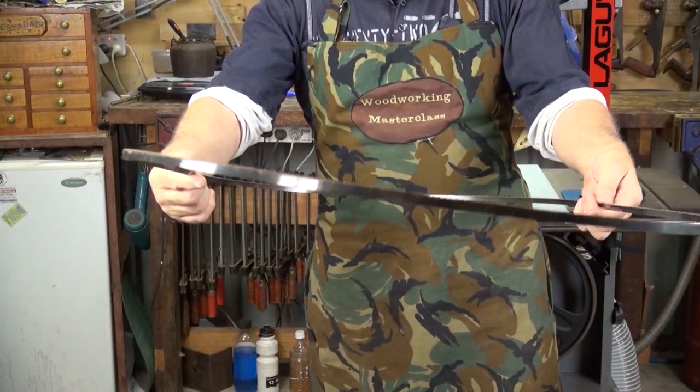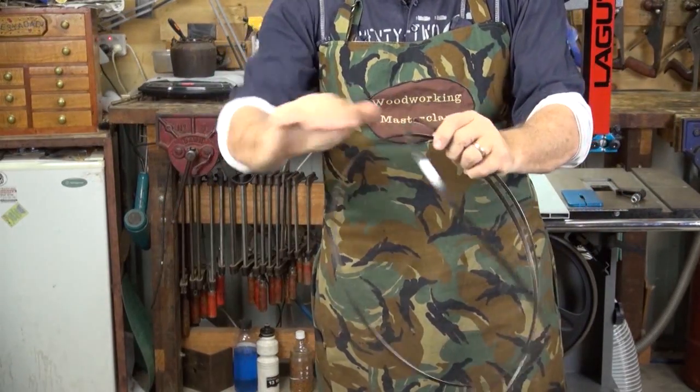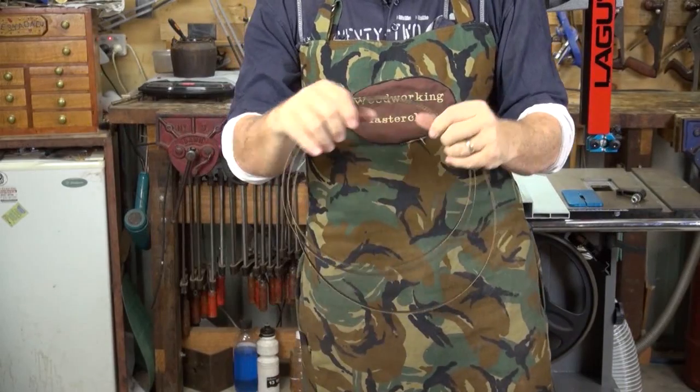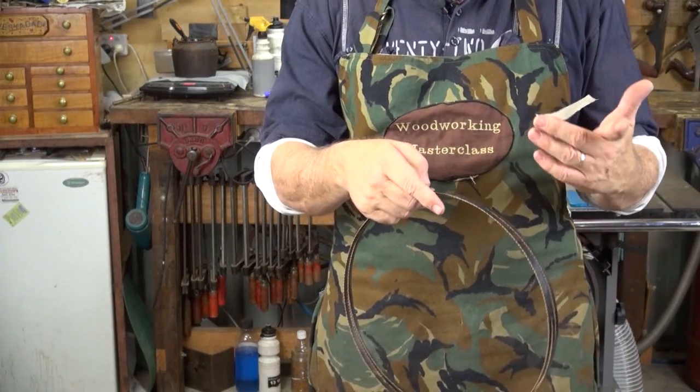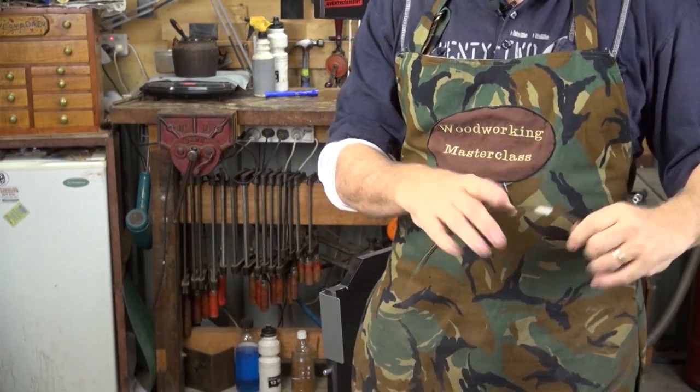Just to recap, to fold the blade, allow the end farthest away from you to sag and as it does, briskly turn both wrists into each other. Another good tip is once they're wound up, wrap a little bit of tape around it and that'll prevent them from springing apart.